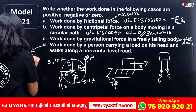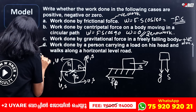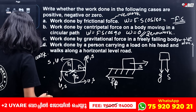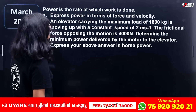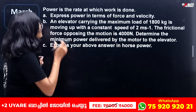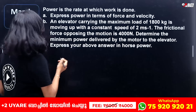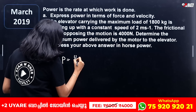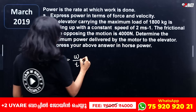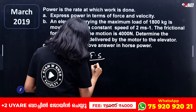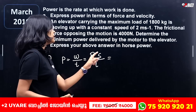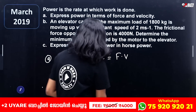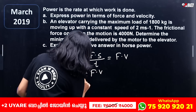Work done by a person carrying load on his head along a horizontal road is zero work — already discussed. Power is the rate at which work is done. Express power in terms of force and velocity: P = Work/time = Force × displacement/time = Force × velocity. So power P = F into V.